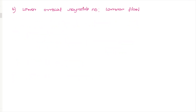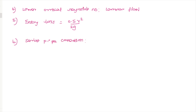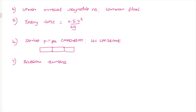The next question is about losses — specifically the entry loss formula: 0.5 × V² / 2g. The following question concerns pipe connections in series: when pipes are in series, the head is additive, while the flow rate is the same.